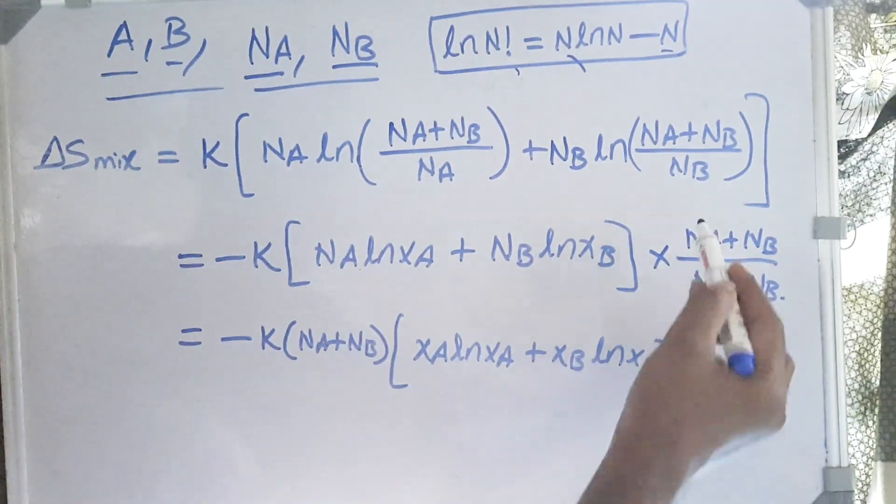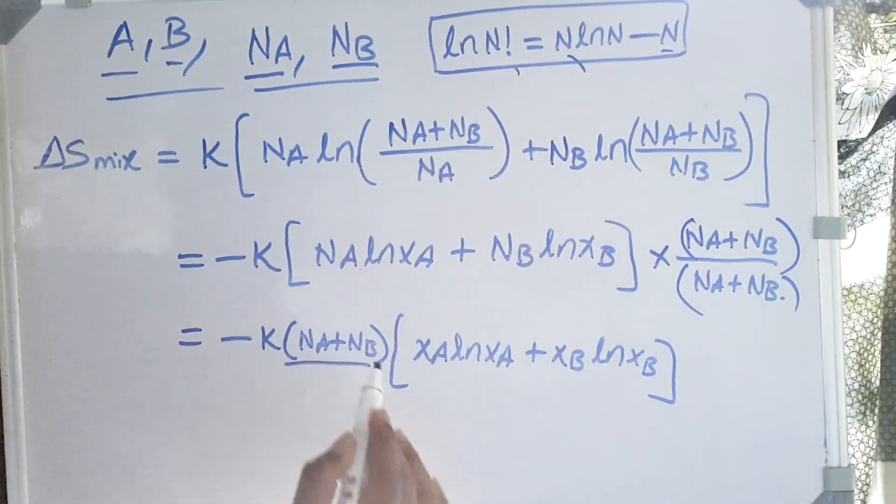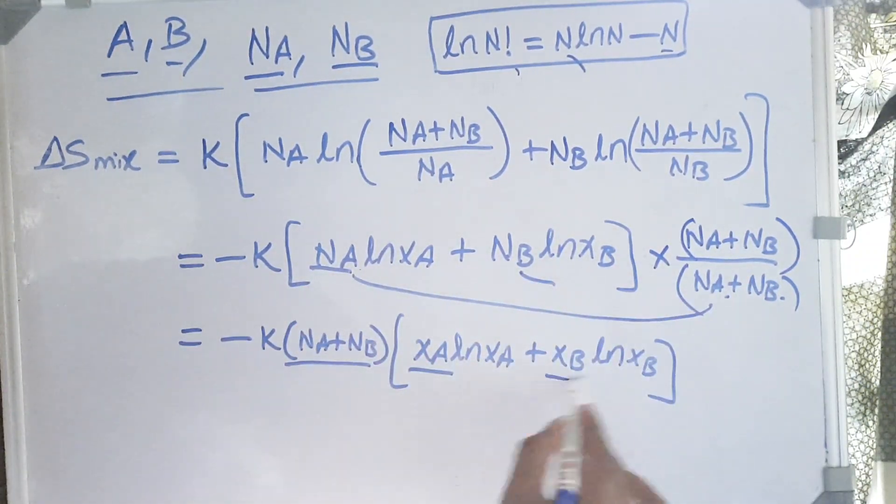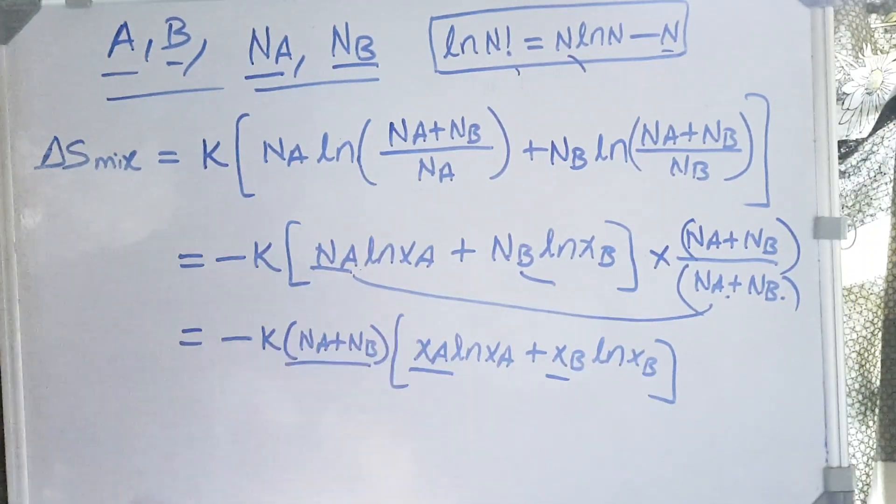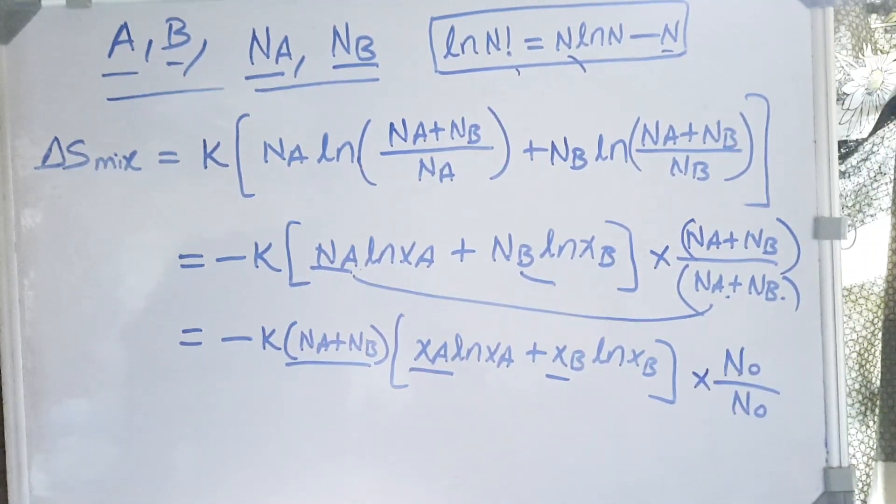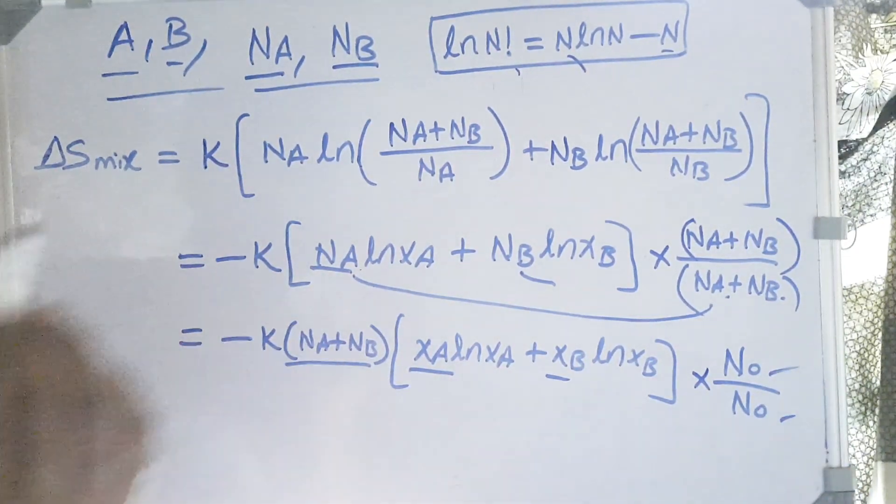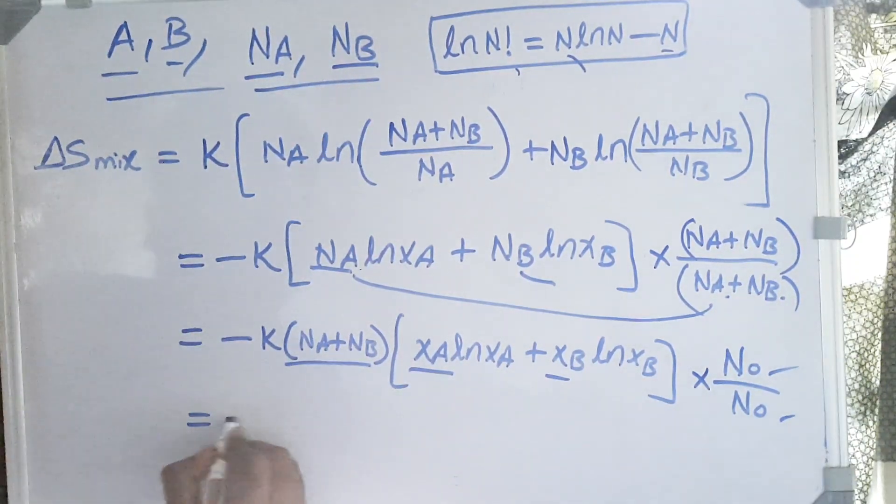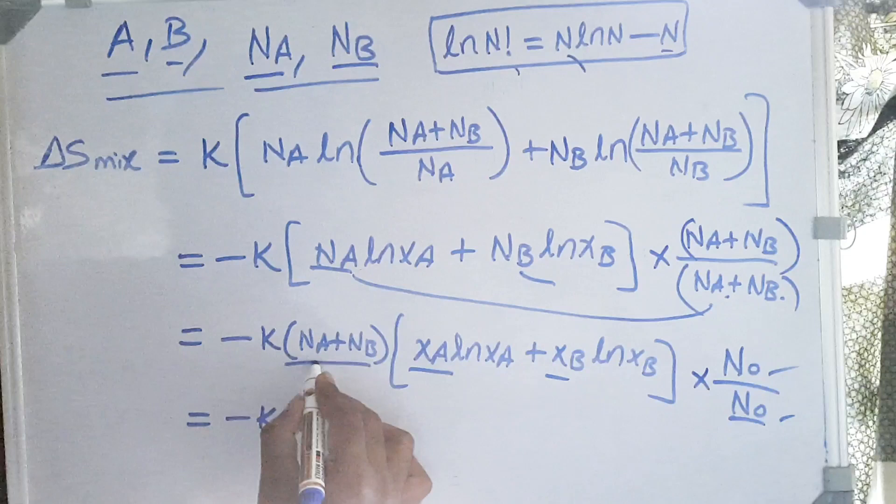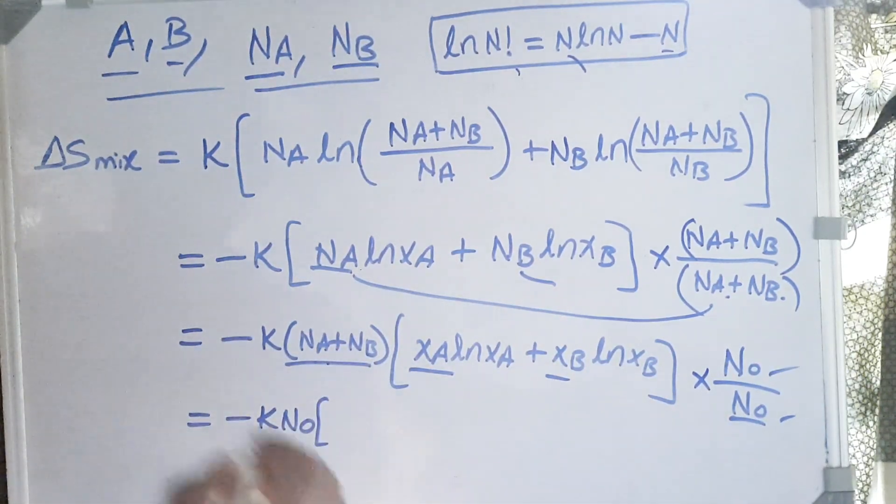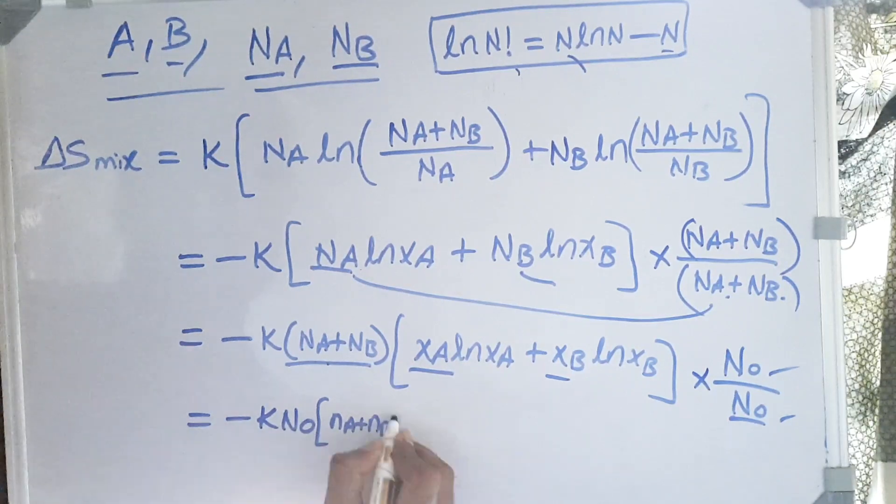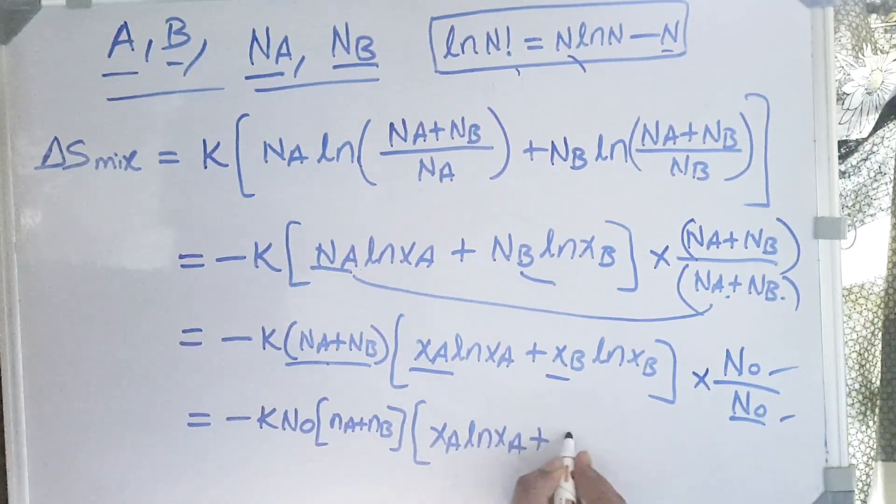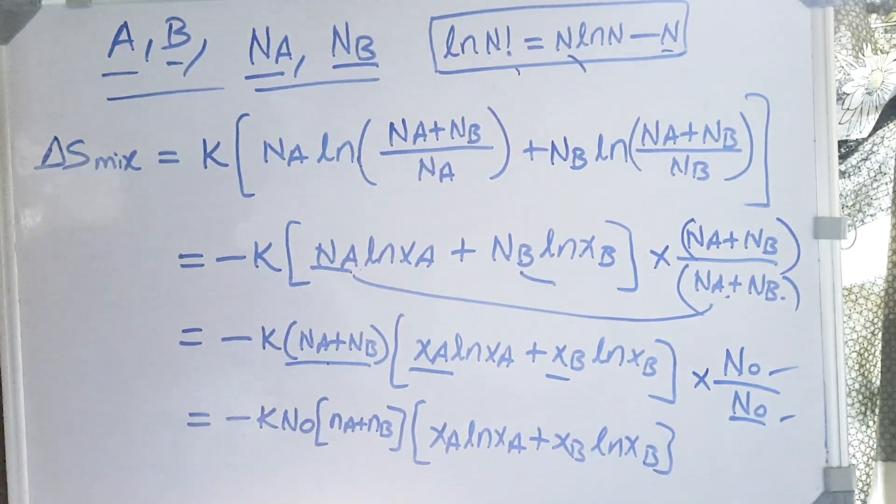Let's multiply and divide with total number of atoms. So Na/(Na+Nb) becomes XA and Nb/(Na+Nb) becomes XB. Now we have the new expression: -K(total number of atoms)(XA ln XA + XB ln XB). Now multiply and divide with Avogadro's number to convert this total number of atoms into number of moles. So we get -KN₀[(Na+Nb)/N₀][XA ln XA + XB ln XB], which is nothing but number of moles of A plus number of moles of B multiplied by XA ln XA plus XB ln XB.